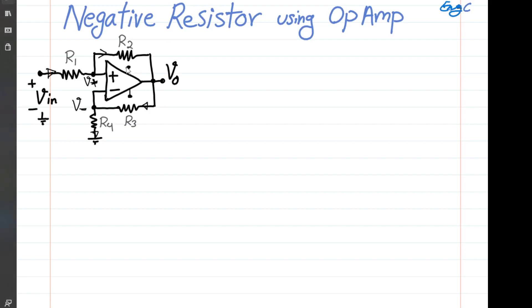Negative impedance, or negative resistor, is realized in this single op-amp circuit. We want to find the input resistor in this circuit and also find the voltage gain.